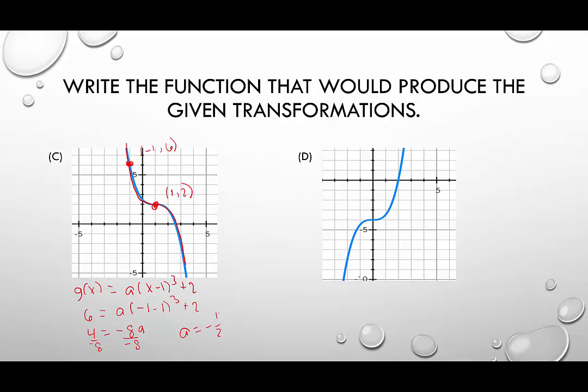So there was a shrink. So we have our a. We have our point of inflection. We can now write the equation of this function. That would be g of x equals negative 1 half times x minus 1 cubed plus 2.